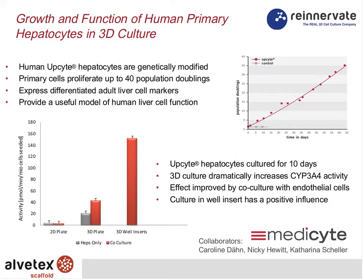This is a collaboration between ReInnovate and Metasite, a company based in Germany which has developed technology called UpSite, enabling hepatocytes and other cells to continue to proliferate for up to 40 population doublings. Metasite are applying their technology to a 3D platform using Albatex. Not only did they get a higher level of CYP3A4 activity in 3D compared to 2D, but there was also an enhanced effect when co-cultured with endothelial cells, showing the mixture of two cell types growing in 3D makes a significant difference.